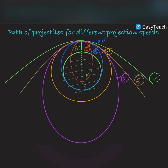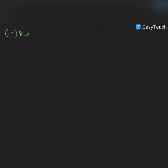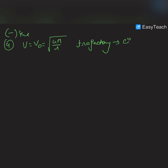In case four, the velocity given equals the orbital velocity, v equals v_o equals the square root of GM/r. Therefore the trajectory is circular. The orbit is a bounded orbit and the total energy of the satellite is negative.